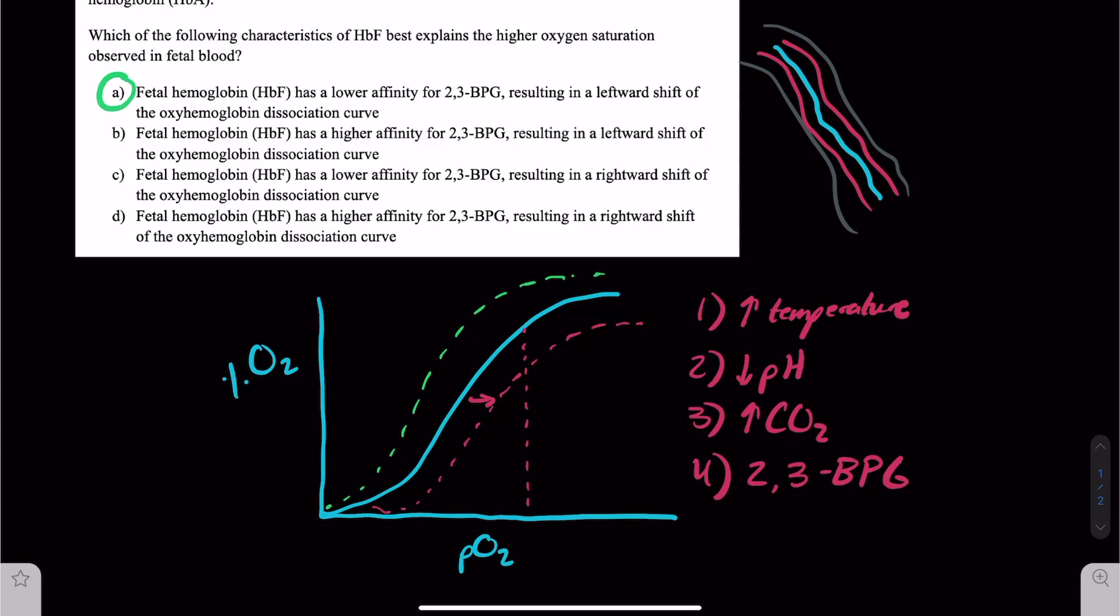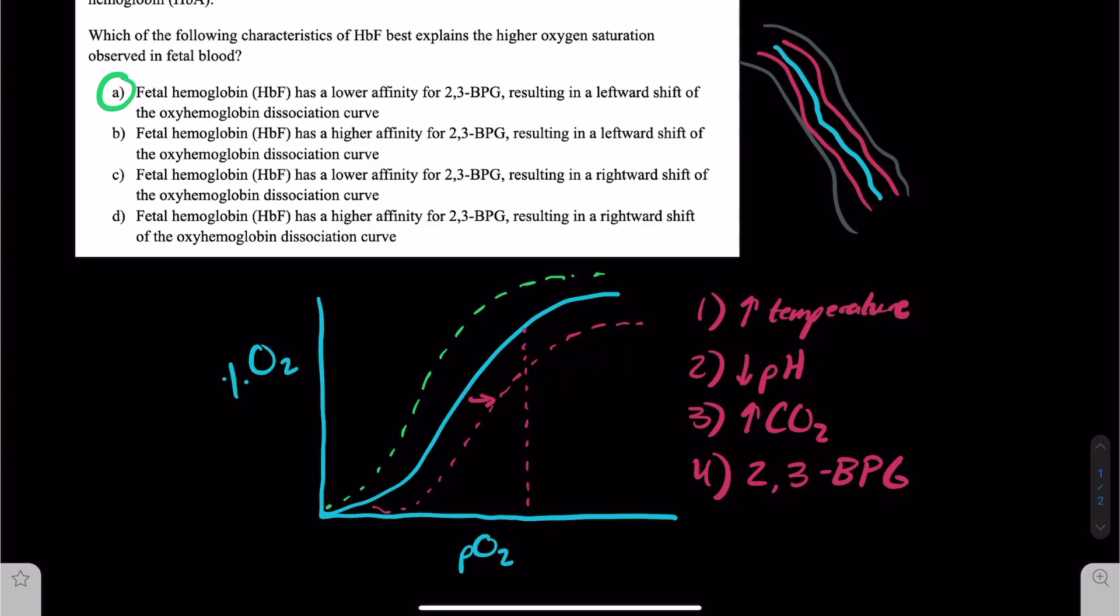These other answers don't make sense and we don't even really need to know why fetal hemoglobin has a higher affinity or a lower affinity for 2,3-BPG rather. Biochemically, we just need to have a little bit of knowledge about the oxyhemoglobin association curve.